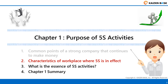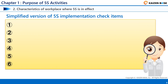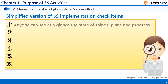The next topic is about the characteristics of a workplace where 5S is in effect. Let's confirm what kind of features a company has where 5S is in effect, using the simplified version of 5S implementation check items. Please think about how many items are practiced in your workplace. Item 1: Anyone can see at a glance the state of things, plans, and progress.